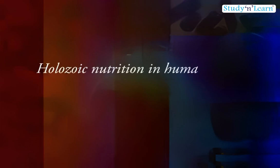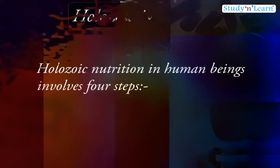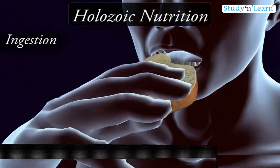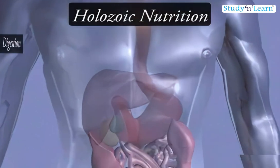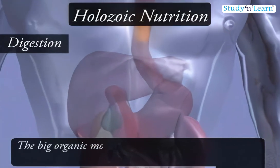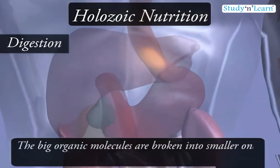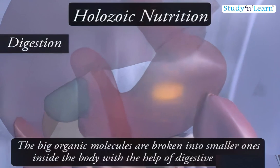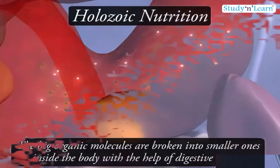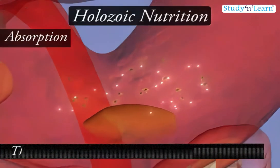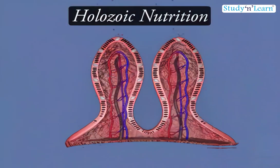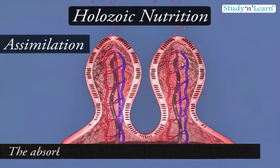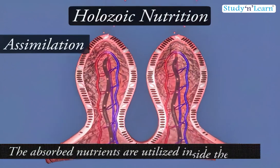Holozoic nutrition in human beings involves four steps: Ingestion — when the food is taken in through the mouth; Digestion — when the big organic molecules are broken into smaller ones inside the body with the help of the digestive system; Absorption — when the simple molecules are absorbed into the cells; and Assimilation — when the absorbed nutrients are utilized inside the cell.